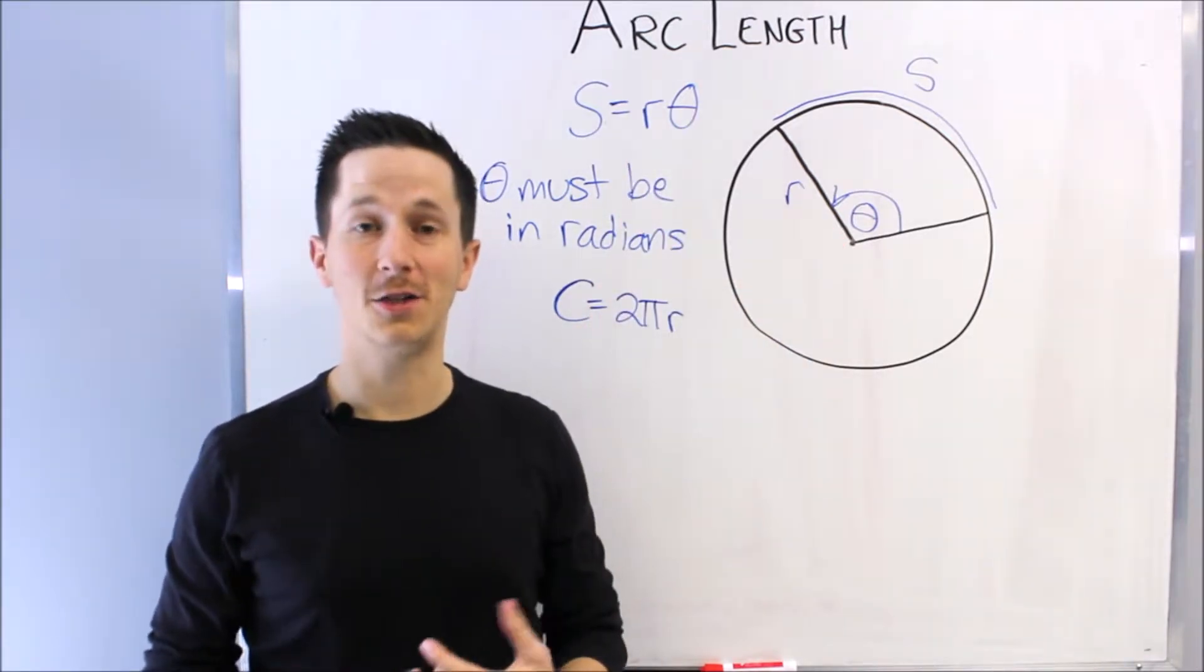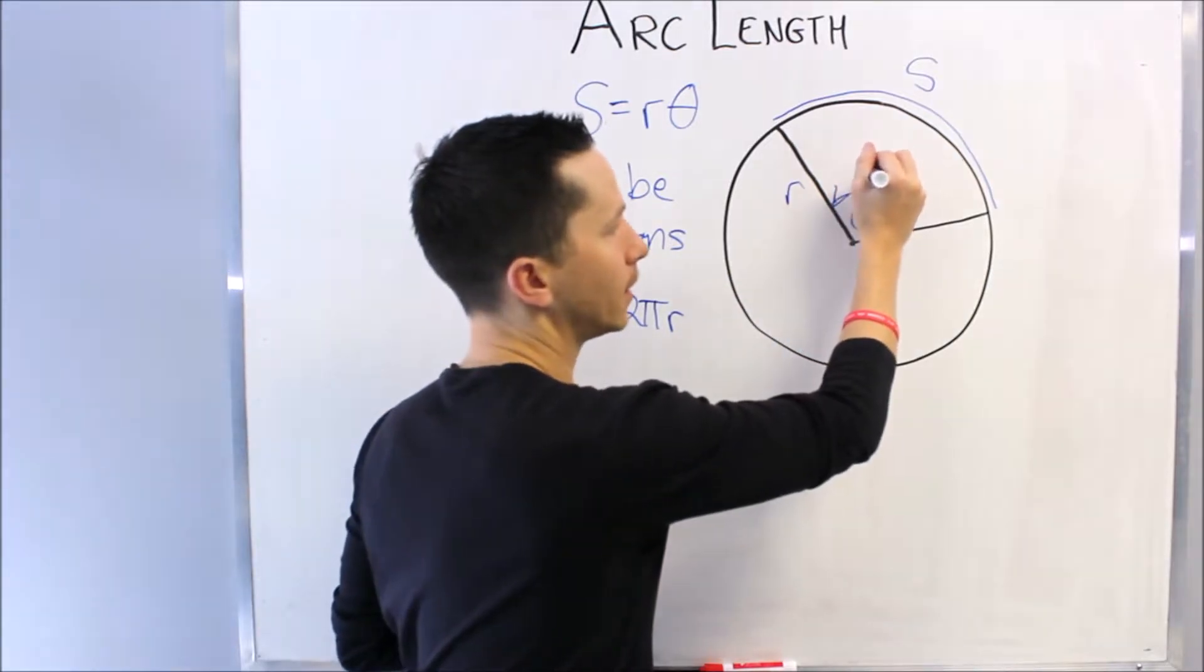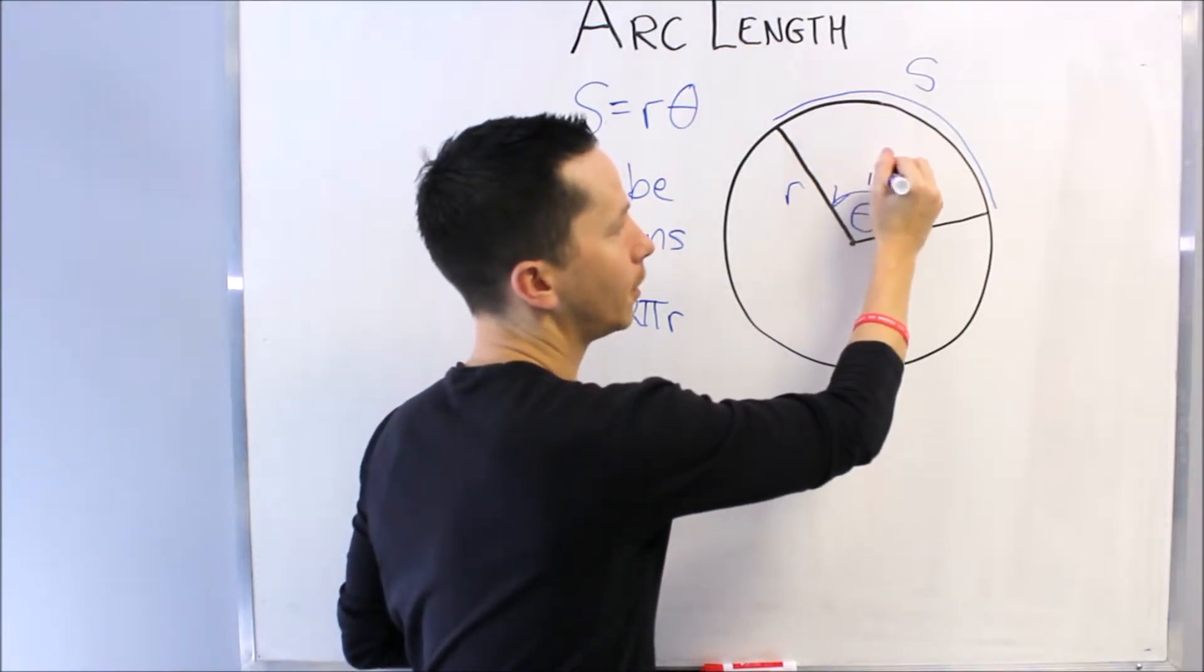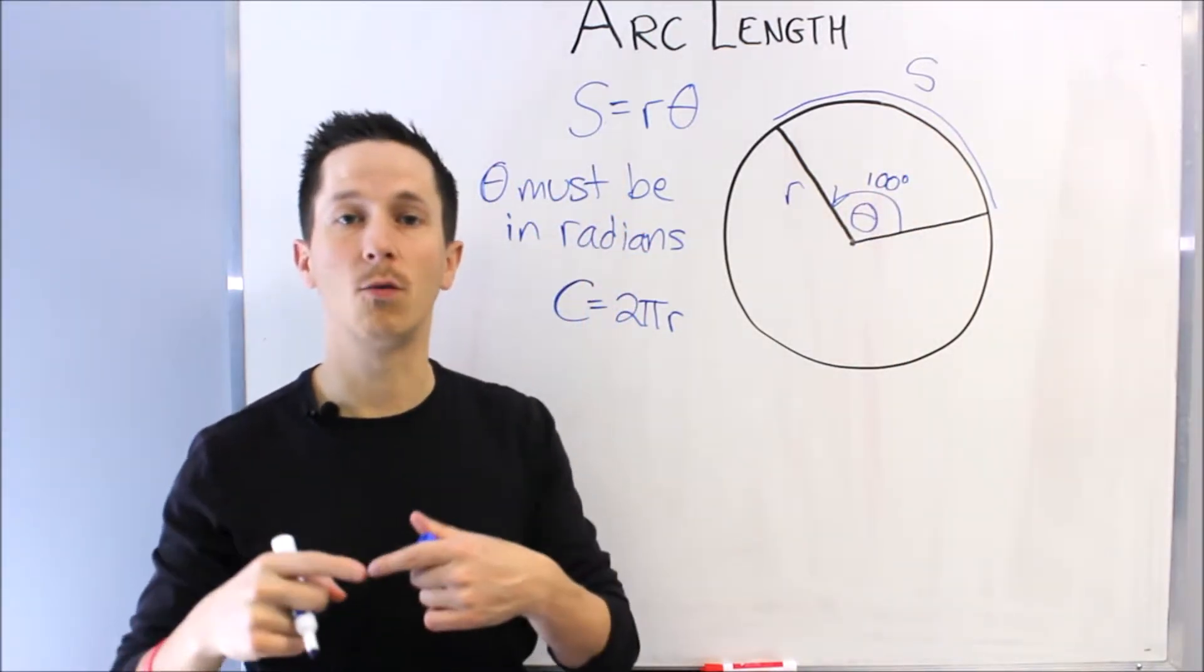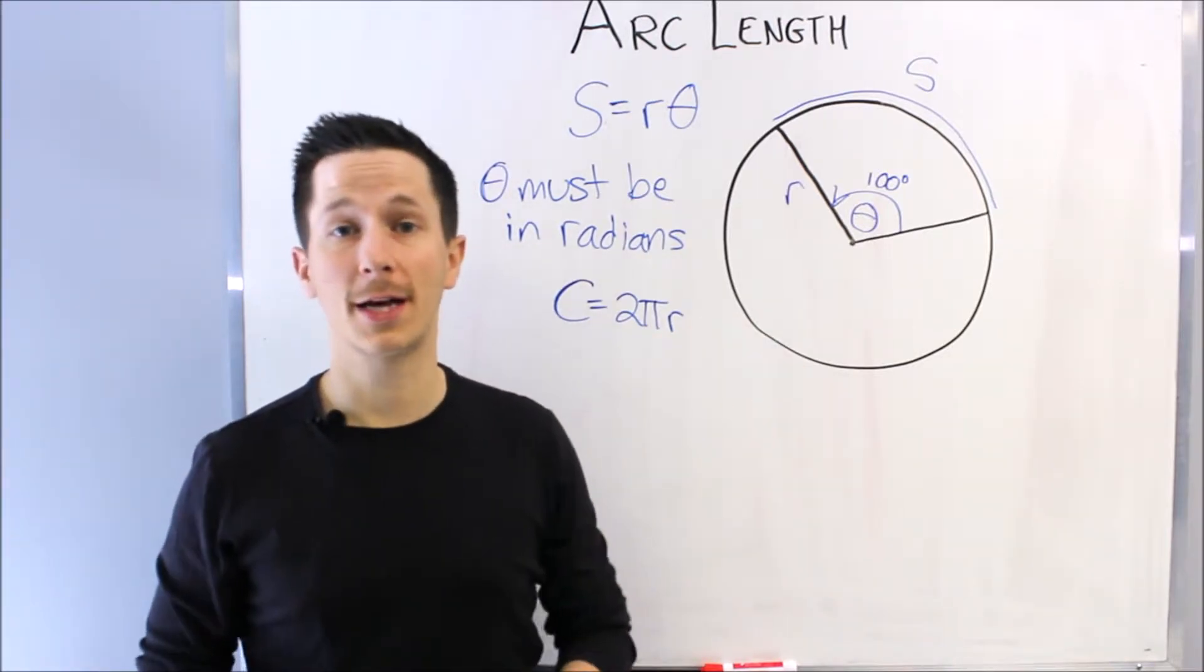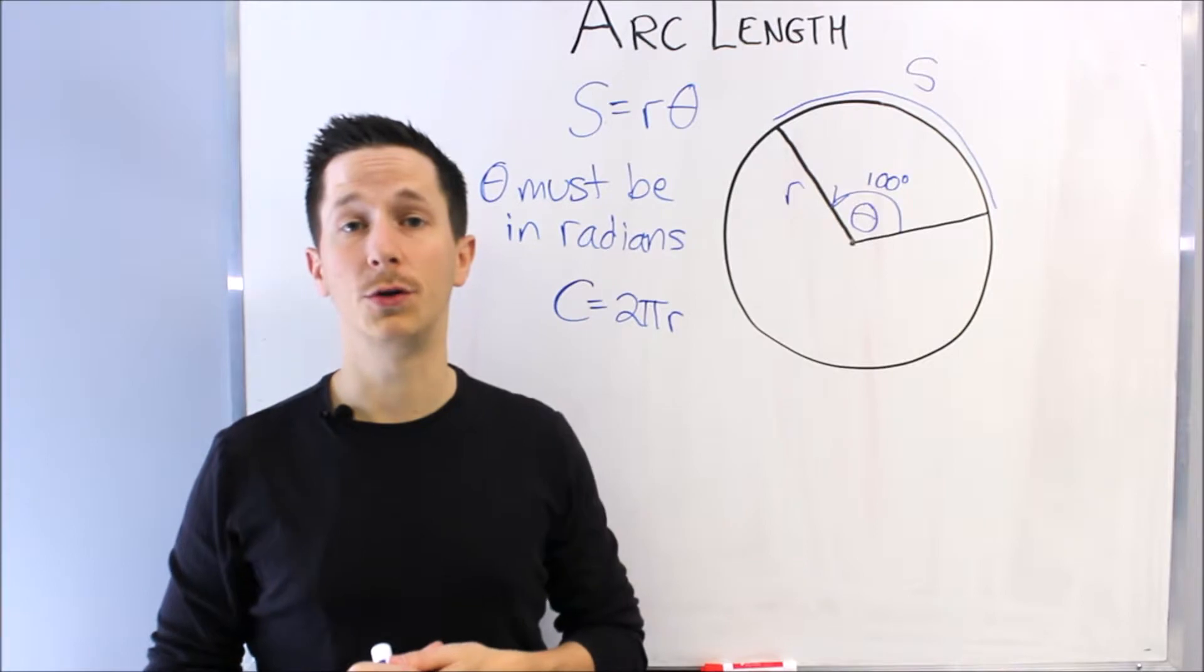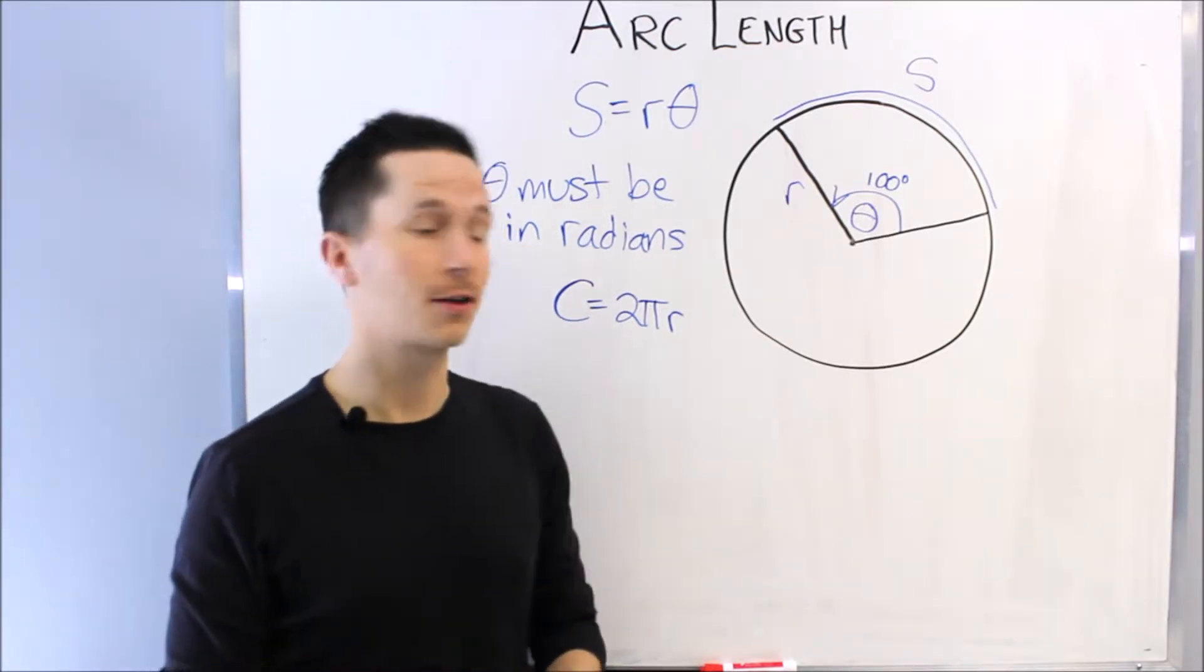It will either be, you know, they'll give something like this where this is 100 degrees, or they'll give a word problem where a bike tire or something rolls through an angle of 3000 degrees or something like that, and we have to adjust, turn it to radians, and then find the arc length.